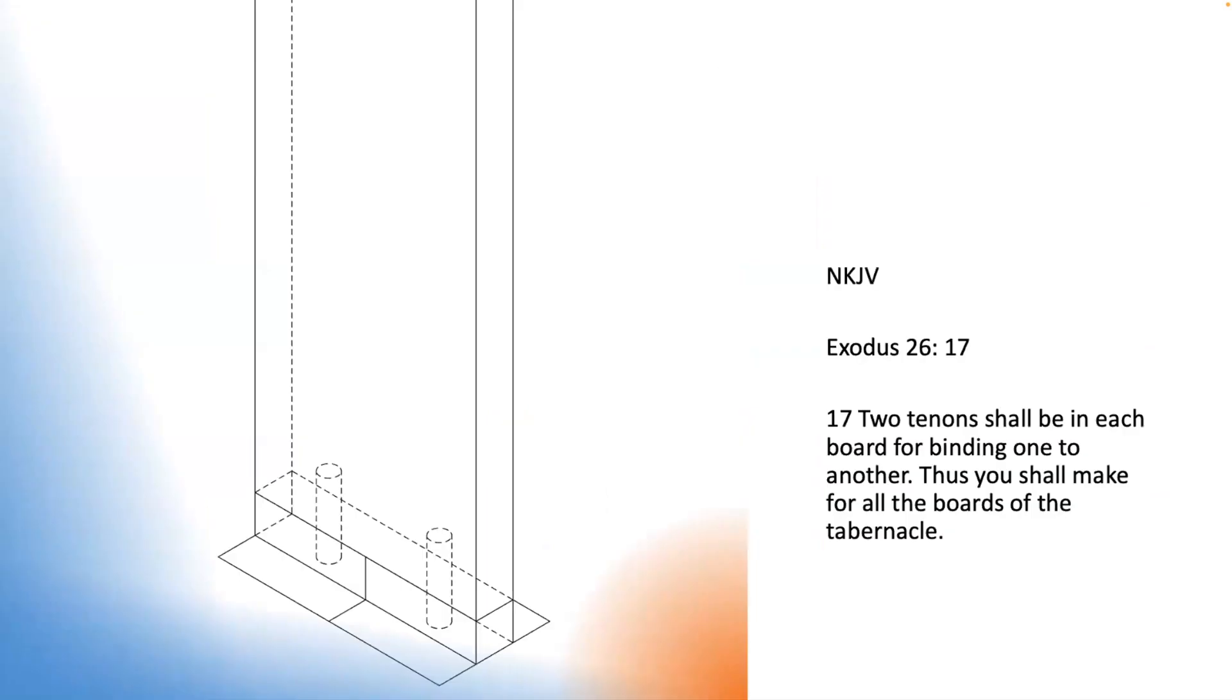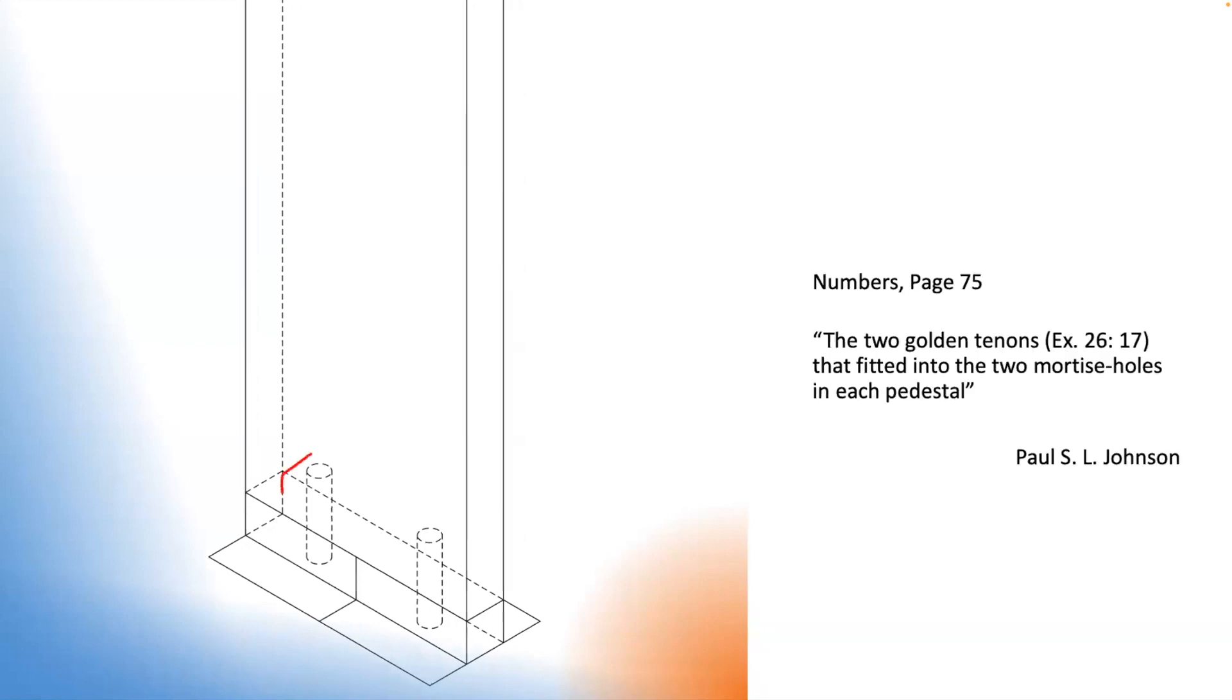Exodus 26:17: 'Two tenons shall be in each board for binding one to another. Thus you shall make for all the boards of the tabernacle.' Here we see the tenons in the dotted lines, which held the sockets or pedestals to the boards.